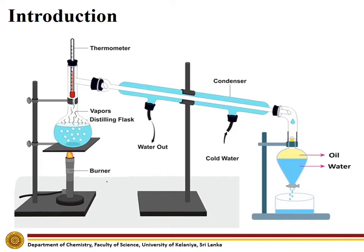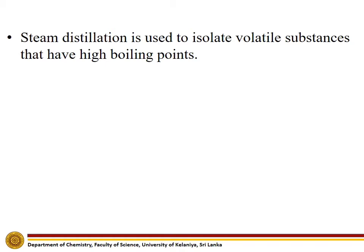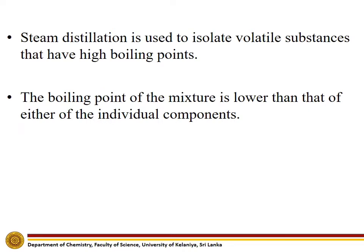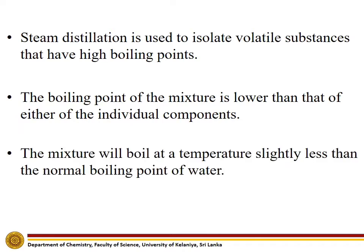Steam distillation is one of the methods used for obtaining essential oils from various plant-based substances. The steam distillation setup used in the extraction of oil is shown in this slide. Steam distillation is used to isolate volatile substances that have high boiling points. When two immiscible liquids are distilled together, the boiling point of the mixture is lower than that of either of the individual components. Therefore, high boiling compounds, which can decompose before they boil if heated alone, can be distilled at temperatures below 100 degrees Celsius using this process. The mixture will boil at a temperature slightly less than the normal boiling point of water, which assures that the evaporation of essential oil takes place under mild conditions.